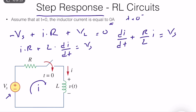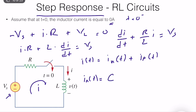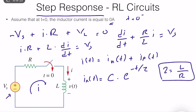So we can simply rewrite this in the standard form: dI over dt plus R over L times I is equal to Vs over L. We know that I of T is composed of I homogeneous of T plus I particular of T. I homogeneous of T is equal to C times e to the power minus T divided by tau, and tau is equal to L over R.